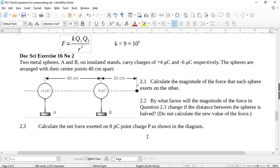Let's look at this Doc Set exercise 16 number 2, where we've got a net force to calculate. Two metal spheres A and B on insulated stands carry charges of 4 microcoulombs and minus 6 microcoulombs respectively. The spheres are arranged with their center points 40 centimeters apart. Here you can see this one, and here's the third object for the last part of the question.